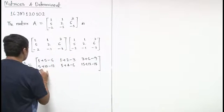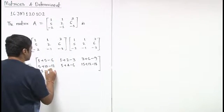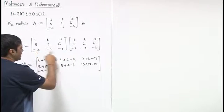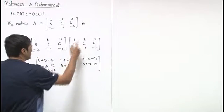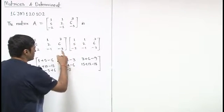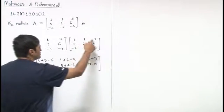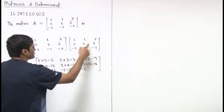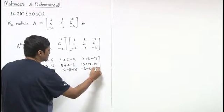R3 versus C1: (-2)×1 + (-1)×5 + (-3)×(-2) = -2 - 5 + 6 = -1. R3 versus C2: (-2)×1 + (-1)×2 + (-3)×(-1) = -2 - 2 + 3 = -1. Finally, R3 versus C3: (-2)×3 + (-1)×6 + (-3)×(-3) = -6 - 6 + 9 = -3.